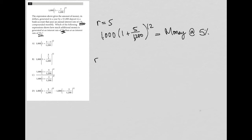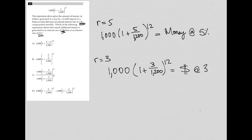And then the same for the 3% rate. R equals 3, so that expression would be 1,000 times 1 plus 3 over 1,200 to the 12th power. And that equals money at 3%.